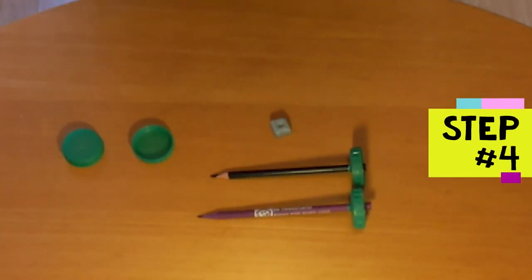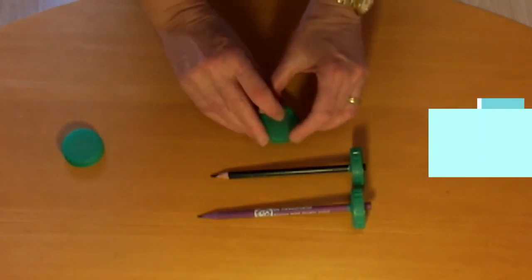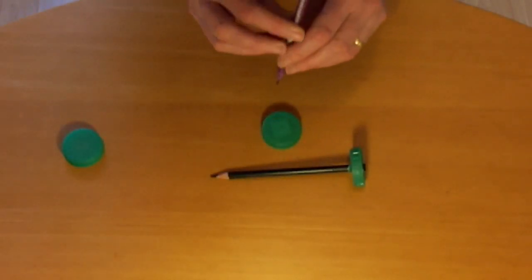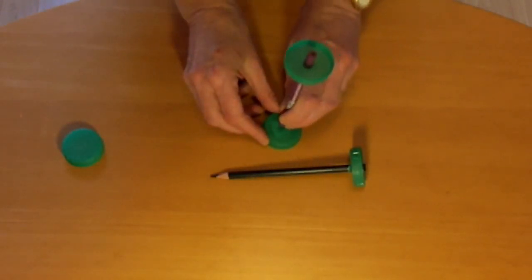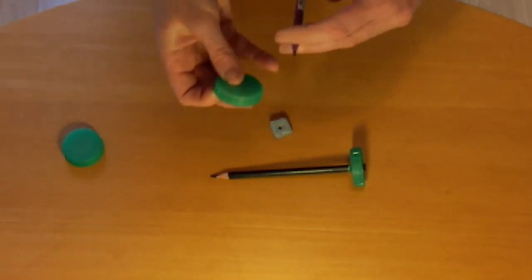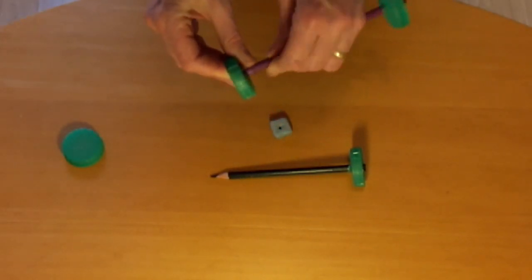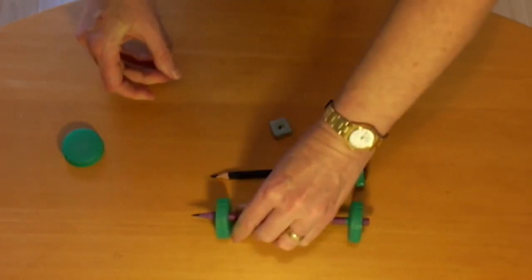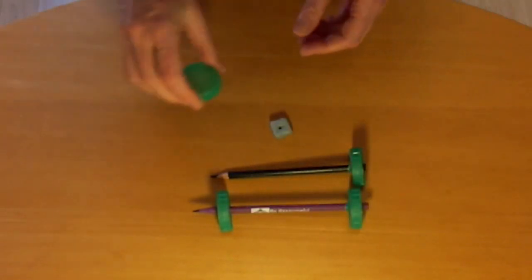Step four is to make the other two wheels. You're going to place a bottle lid open end down on the blue tack this time. Make a hole in the middle by pushing straight down. Take it off the blue tack and push it and twist it onto this end of the pencil. Repeat for the final bottle lid.